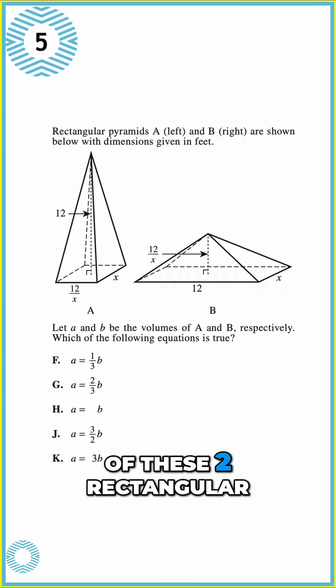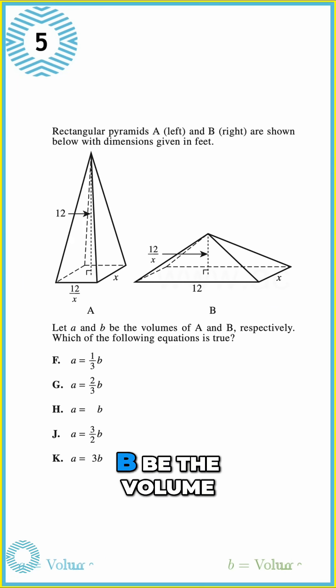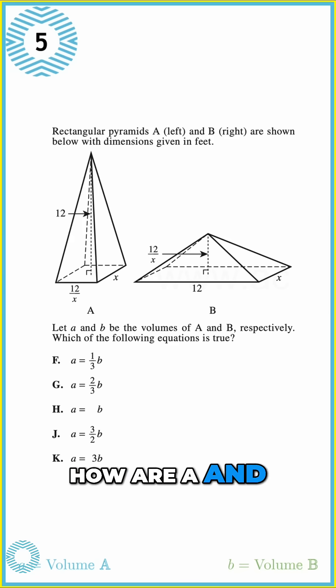The problem asks us to compare the volumes of these two rectangular pyramids labeled A and B. Let A be the volume of A, and B be the volume of B. How are A and B related?